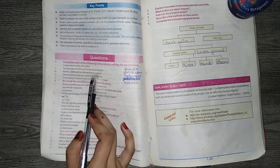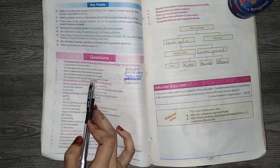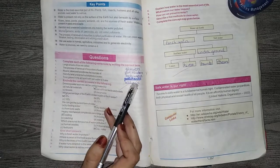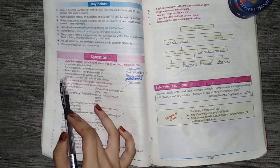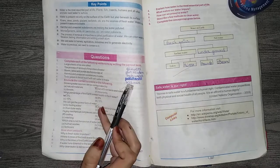Number 3, the rivers, lakes and ponds are the sources of fresh water. Number 4, the harmful and unwanted substances in water. This answer is pollutants. Number 5, the toxic gases in the air react with the rain water to make it acidic.